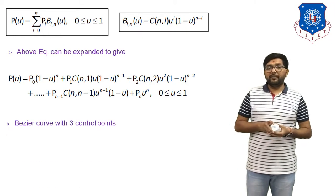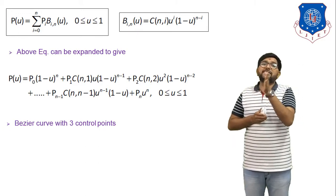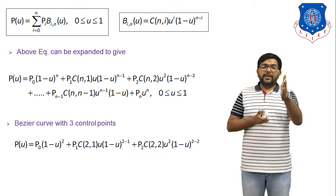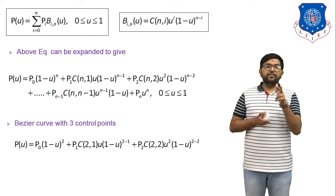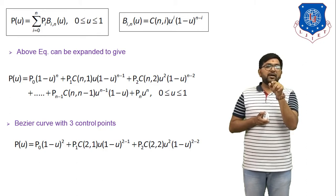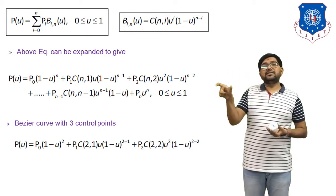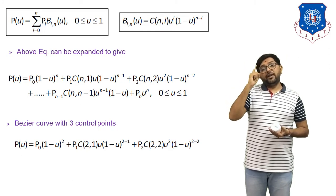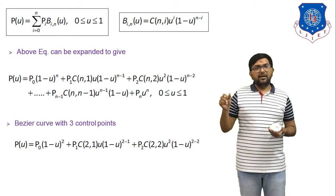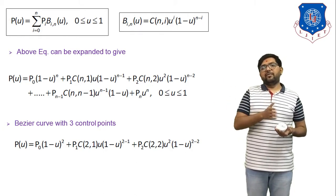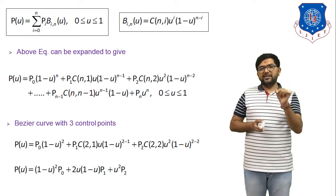For 3 control points, n = 2, so σ runs from i=0 to 2. The equation becomes: P(u) = P0·(1−u)² + P1·C(2,1)·u·(1−u)^(2−1) + P2·C(2,2)·u²·(1−u)^(2−2). Simplified: P(u) = (1−u)²·P0 + 2u(1−u)·P1 + u²·P2.